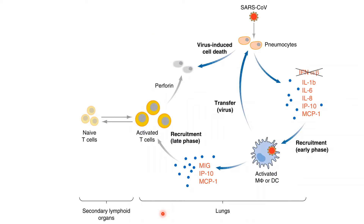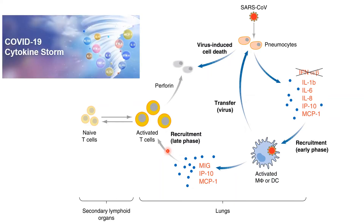This is a model of COVID pathogenesis. The blue arrows show the pathway with data available; the gray arrows are proposed pathways without much data. SARS-CoV-2 infects the pneumocytes, and this will recruit macrophages. The macrophages will produce distinct cytokines like MIG, IP10, and MCP, leading to further recruitment. When this goes unchecked, it leads to the cytokine storm.